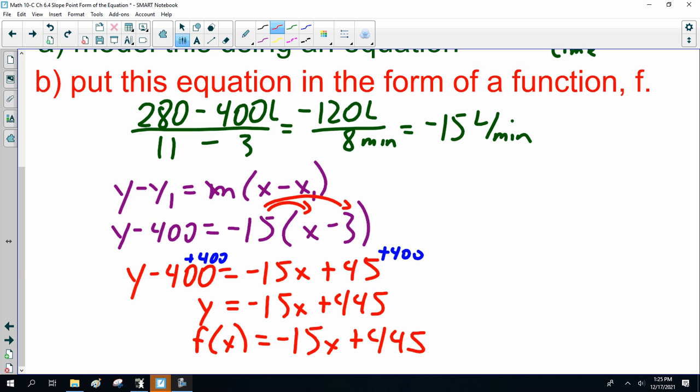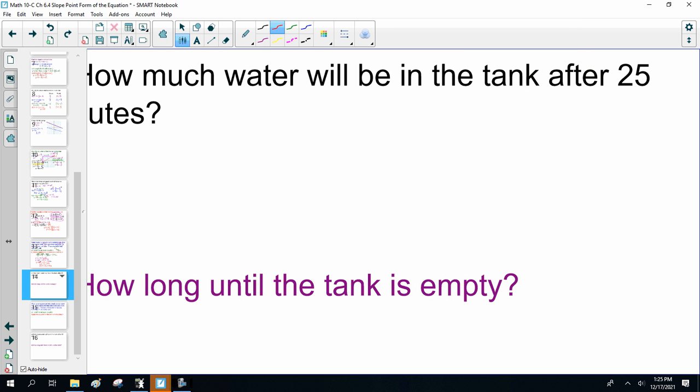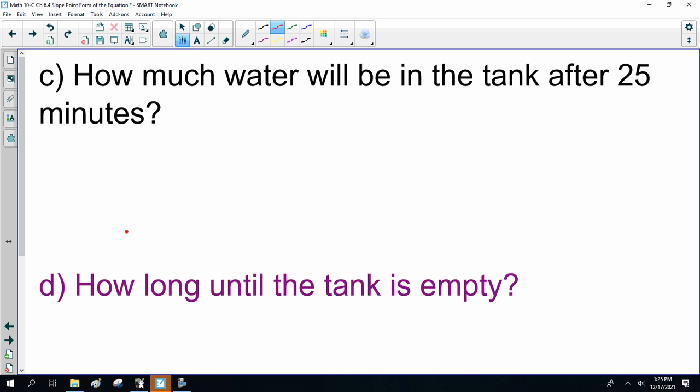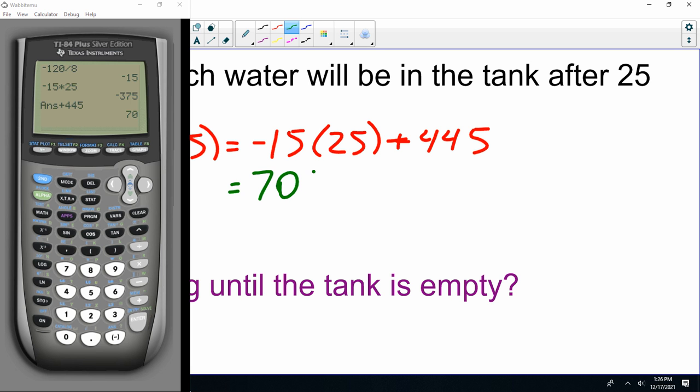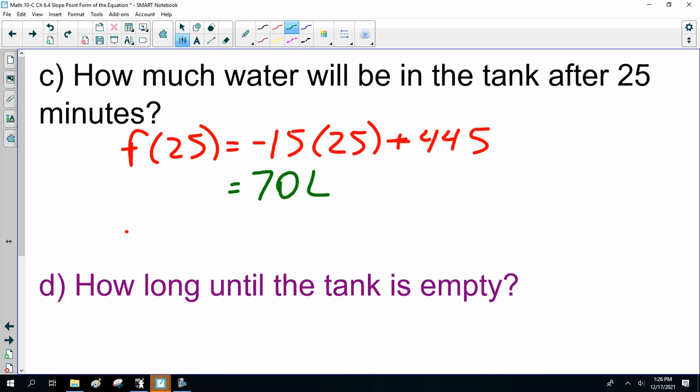All right, we've got much left. All right, so how much water would be in the tank after 25 minutes? F of x equals minus 15x plus 445. Let's solve this equation. Can't do that in my head. Negative 15 times 25 plus 445, 70 liters. So, it'll be 70 liters left.